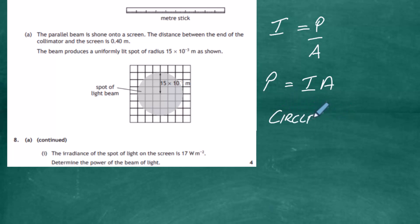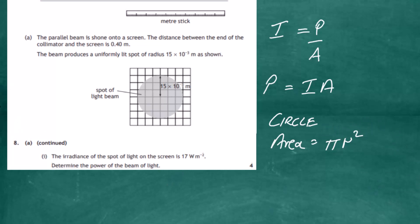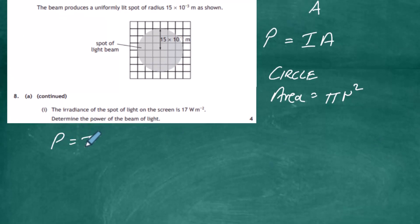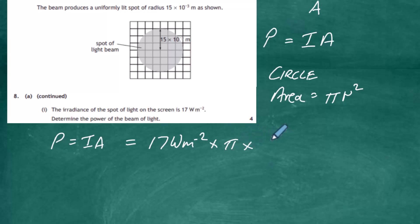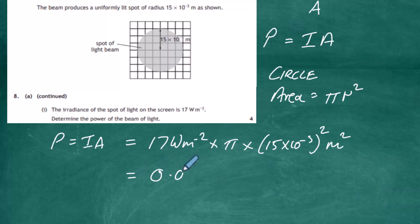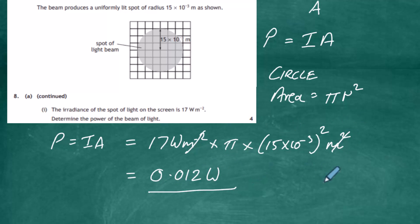The radius of the circle is 15 × 10⁻³ meters, so the area equals πr². Putting numbers into the equation: P = I × A, which equals 17 watts per meter squared multiplied by π × (15 × 10⁻³)² meters squared. The meters squared cancel out, and we get a value of 0.012 watts. So the power of that light source is 0.012 W.